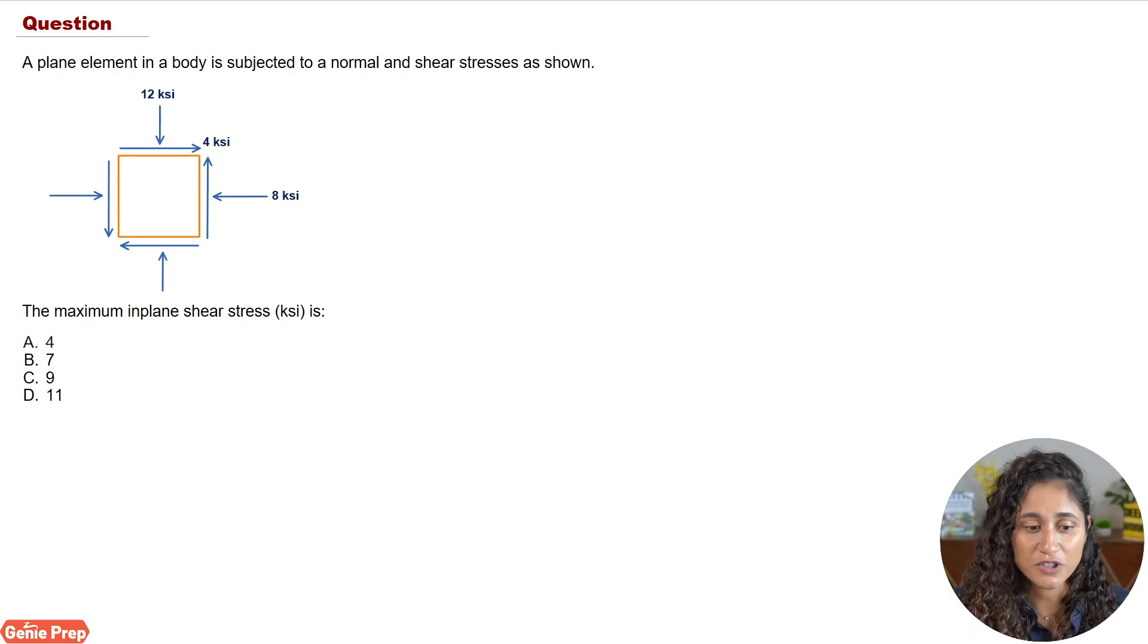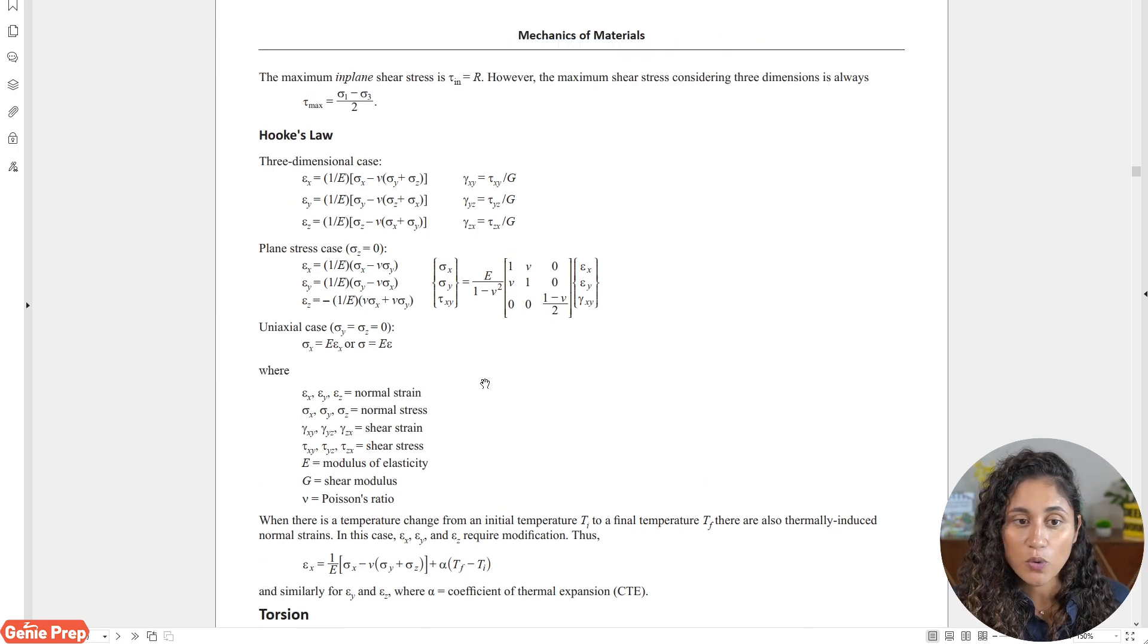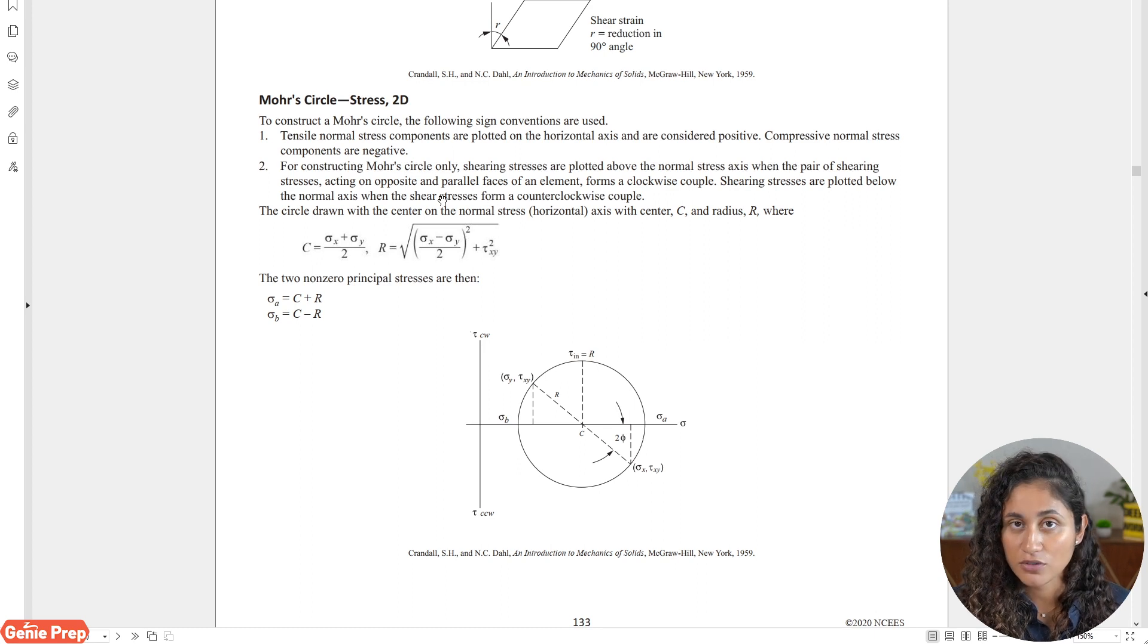Now let's go ahead and solve this problem. So as I mentioned before, the first thing we're going to do is go to the reference manual and take a look at the equation. Okay, so if you actually type in 'maximum in-plane shear stress' it will take you to this page here, which is under mechanics of materials. And here it says that the maximum in-plane shear stress is equal to R, where R is the radius.